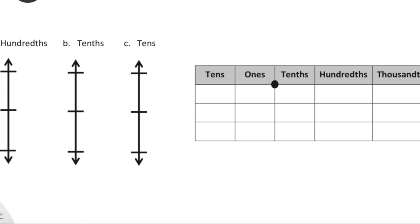We are going to see this type of rounding on our celebration of learning, so please be very thoughtful as you're watching this video. If you need to pause and think about a problem, please do so. If you need to pause, rewind, and listen to the explanation of the vertical number line again, please do that as well. Here we go — let's get into Lesson 7. Today is September 18th, 2018.